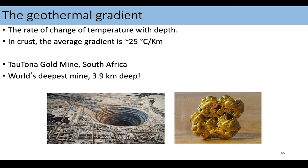We can also think about what's called the geothermal gradient — the rate of change of temperature with depth. As you dig downwards, how much warmer is it going to get per kilometer? The average is about 25 degrees Celsius per kilometer, so if you dig down one kilometer, the temperature will be about 25 degrees warmer than at the surface. The deepest mine on earth is almost four kilometers deep — it is very hot down there. That is a gold mine in South Africa. We will get to mining and resources on earth, such as gold, towards the middle of this class.